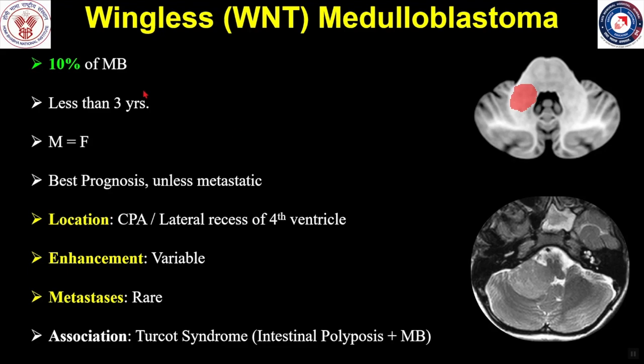Wingless medulloblastomas comprise about 10% of medulloblastomas. These are encountered in children under 3 years of age without any gender predilection. These medulloblastomas have the best prognosis because they seldom metastasize; however, whenever they do metastasize, the prognosis is not as good. They are classically located in the cerebellopontine angle or along the lateral recess of the fourth ventricle. Enhancement is variable and these can be associated with Turcot syndrome, which is a combination of intestinal polyposis.